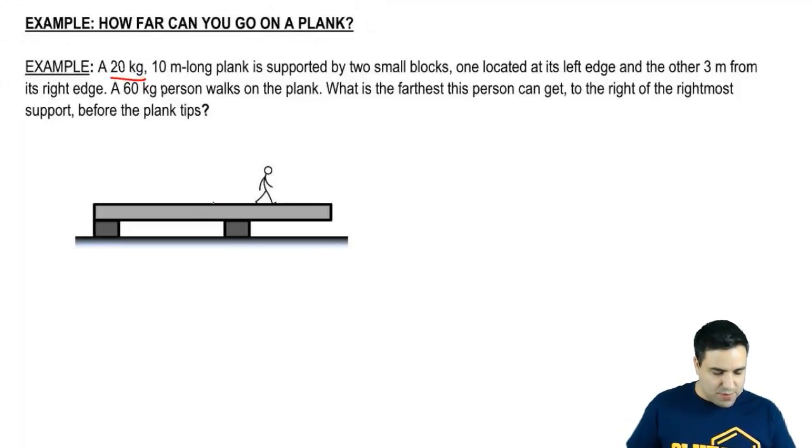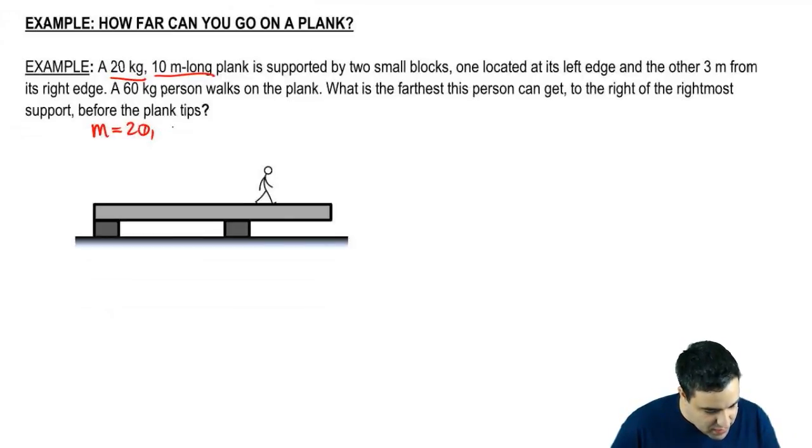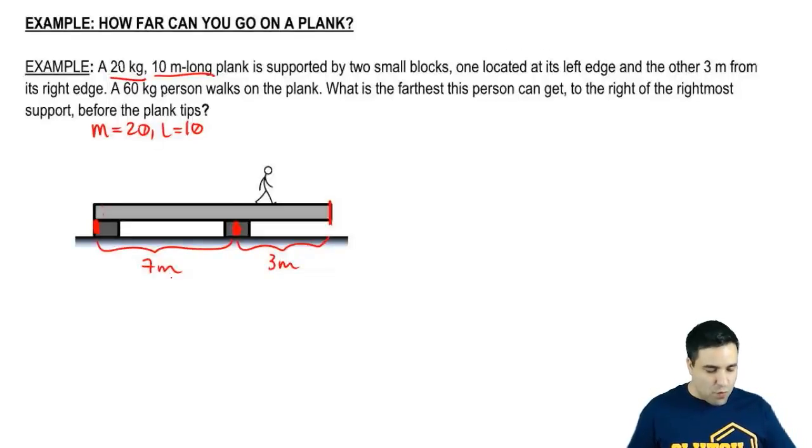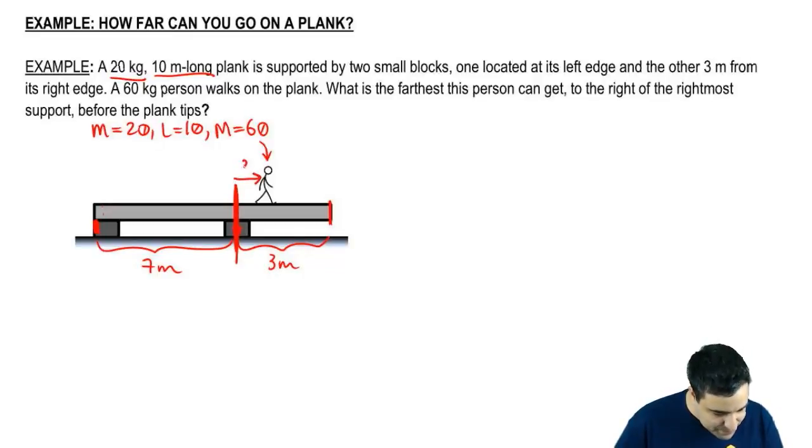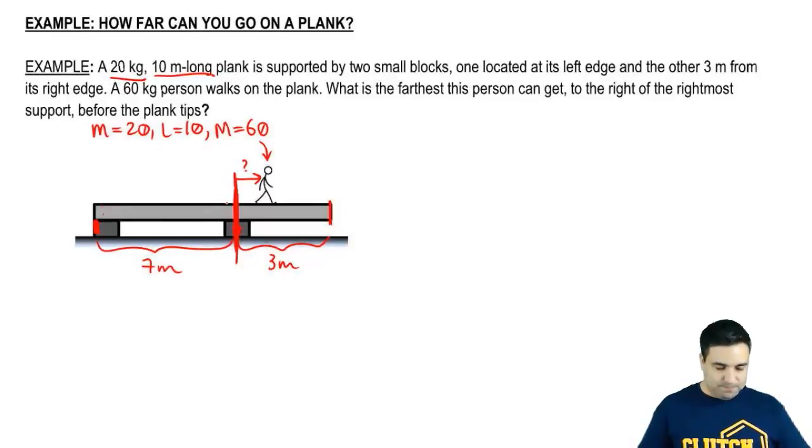All right, so let's check out this example here. So here we have a 20 kilogram plank that is 10 meters long, so mass of plank 20, length of plank 10. It's supported by two small blocks right here, one, two. One is at its left edge, so this is considered to be all the way at the left, even though it's wide here, you can just think of it being right here, at the very left. And the other one is three meters from its right edge. So the right edge of the plank is here, this is three meters away. The entire thing is 10 meters, so if this is three, this distance has to be seven. A 60 kilogram person walks on the plank, so this guy right here, I'm going to call it big M equals 60. And I want to know what is the farthest the person can get to the right of the rightmost support before the plank tips. So I want to know how far he can go to the right of this. So I want to know what is this distance here. What is this distance here?